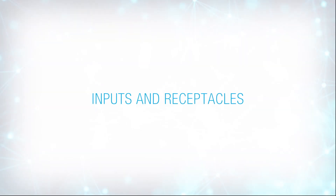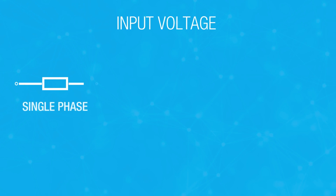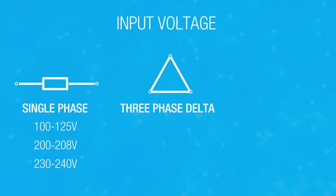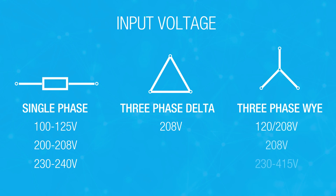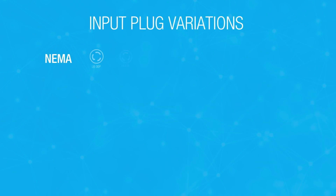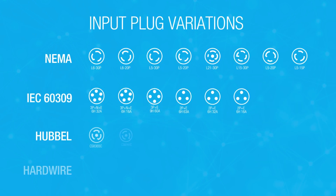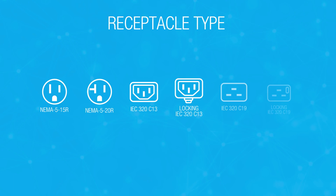Panduit's G5 PDU's input voltage can be single-phase, three-phase delta, or three-phase Y. The input plug variations include everything that you see on this chart. Six receptacle types are also available.